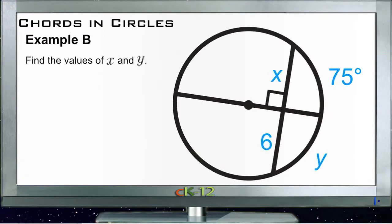Example B says find the values of X and Y. So X is this portion of this chord. That's not a very good color for that. Let's try that again. X is the upper portion of this chord right here, the chord that goes all the way across.